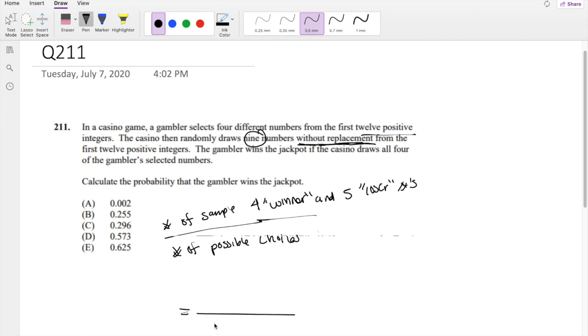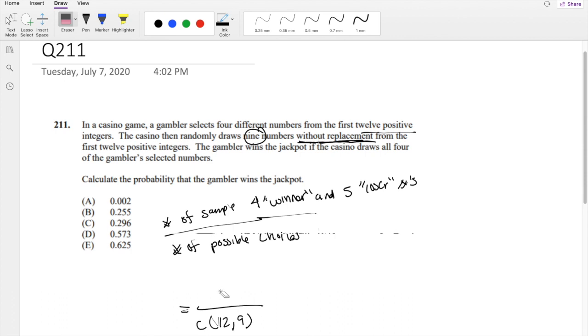Again, the denominator we solved earlier is 12 choose 9. And how many ways can we win? We can win when there is 4 of the integers that are the same. So out of the 4 integers, you're picking 4 numbers that results in a win. And if you already took 4 winners out of 12, then that's 12 minus 4, so there's 8 other integers, 8 other possible numbers that's going to result in a loss. So that's 8 choose 5.